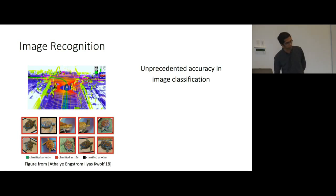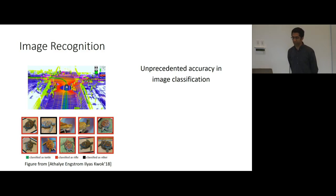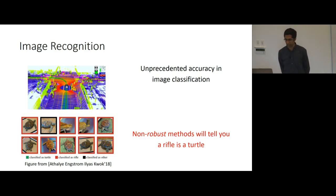To make this more concrete, take a look at these pictures of a turtle which has been 3D printed. To you and me, it looks like a turtle. But to a state-of-the-art image classifier, it thinks this is a rifle. This is all fun and games, but imagine if it was the other way around - what if you had a security checkpoint that thought a rifle was a turtle?